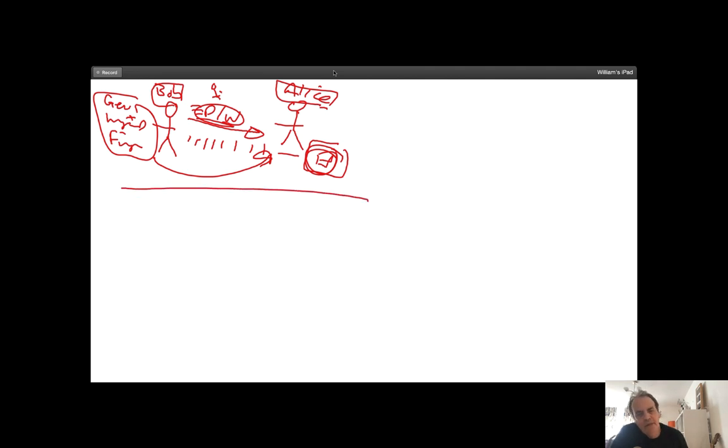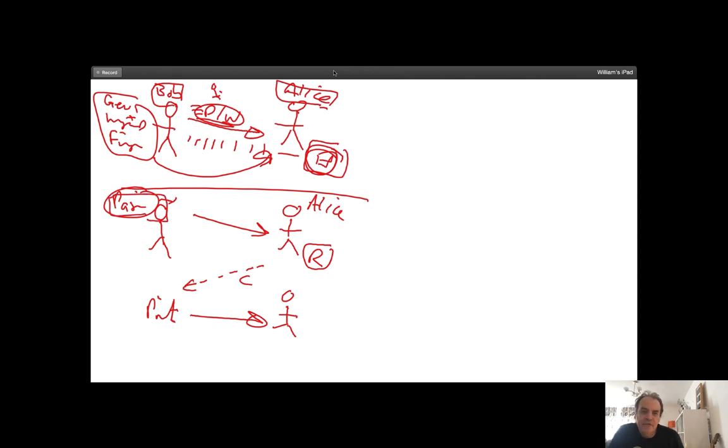With zero knowledge proof, Bob will create a random value or take his password and then convert it into something that Alice cannot determine what the original password was. He passes a value over which Alice will store. Then Alice will send a challenge to Bob, Bob does a calculation to create a proof and sends it back, and Alice checks that Bob still knows his original value.